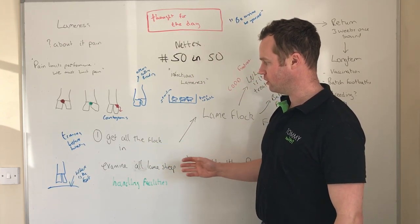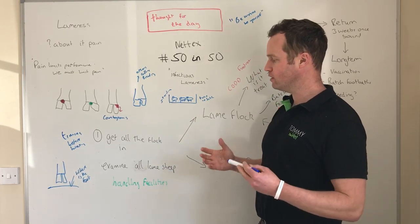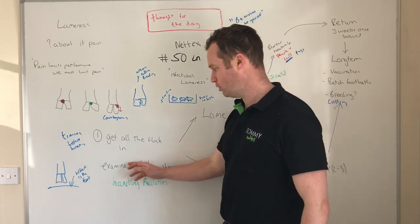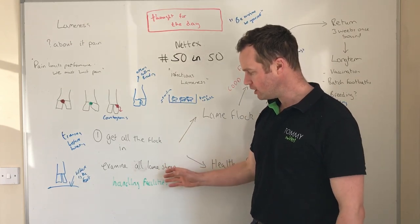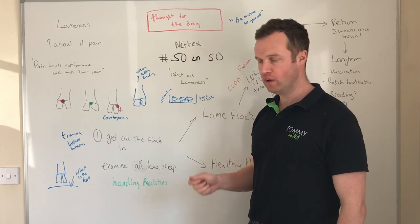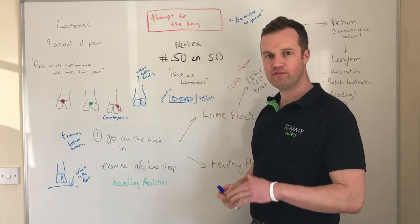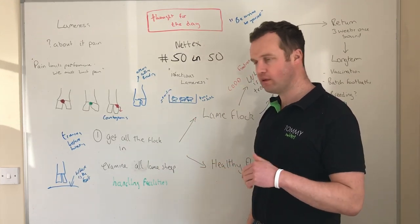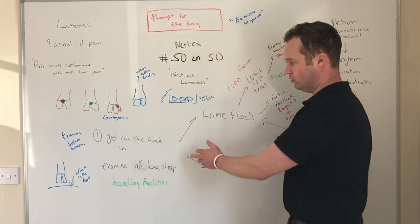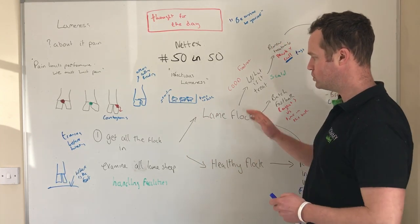When you have a lameness issue, gather all the flock and examine all lame sheep at a minimum — good handling facilities are really important here. Lame sheep and noticeably lame sheep need to be pulled out. You'll miss a few to start and that's okay, but try to pull everything out. Then split them into two pathways: a lame flock and a healthy flock.